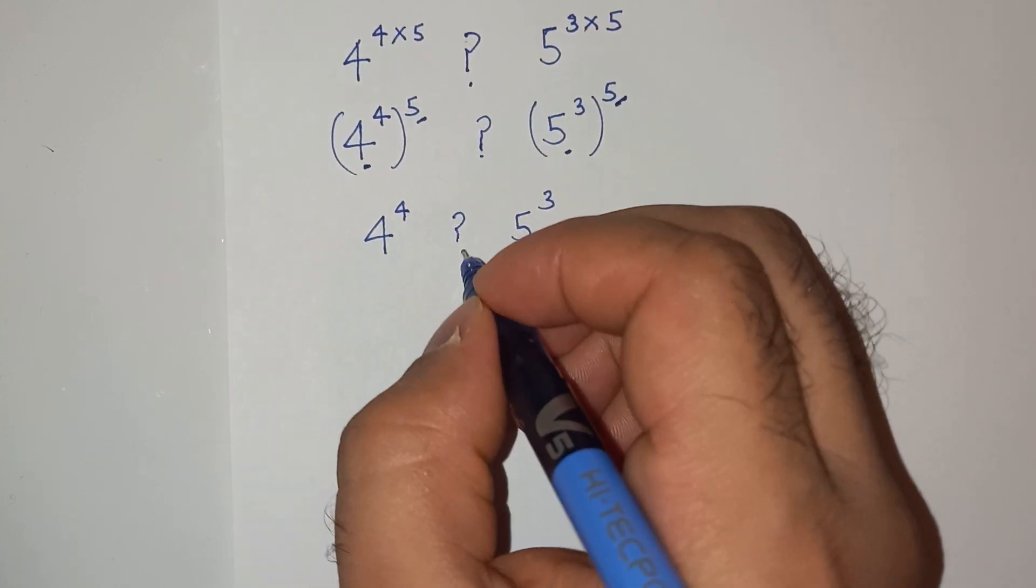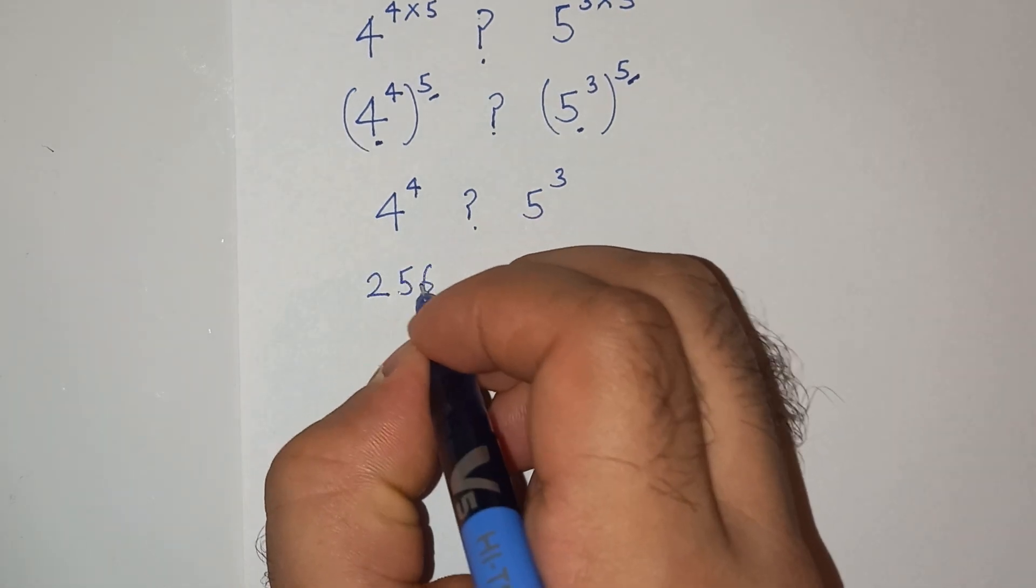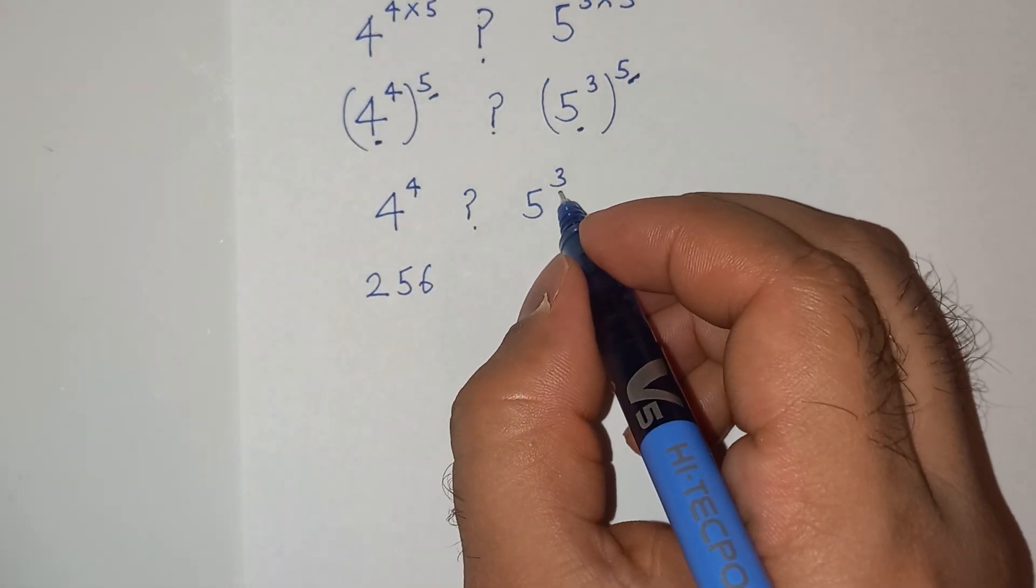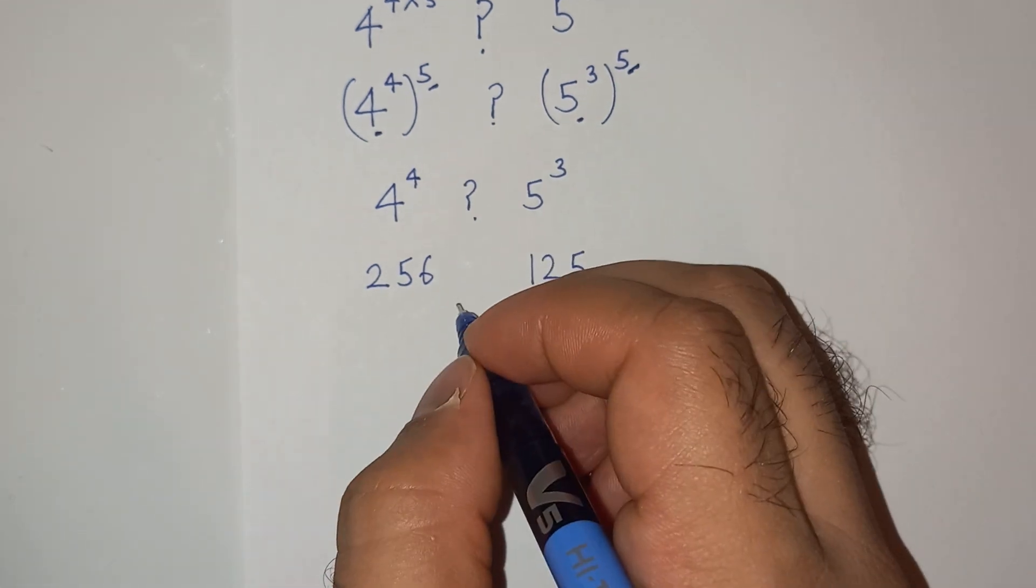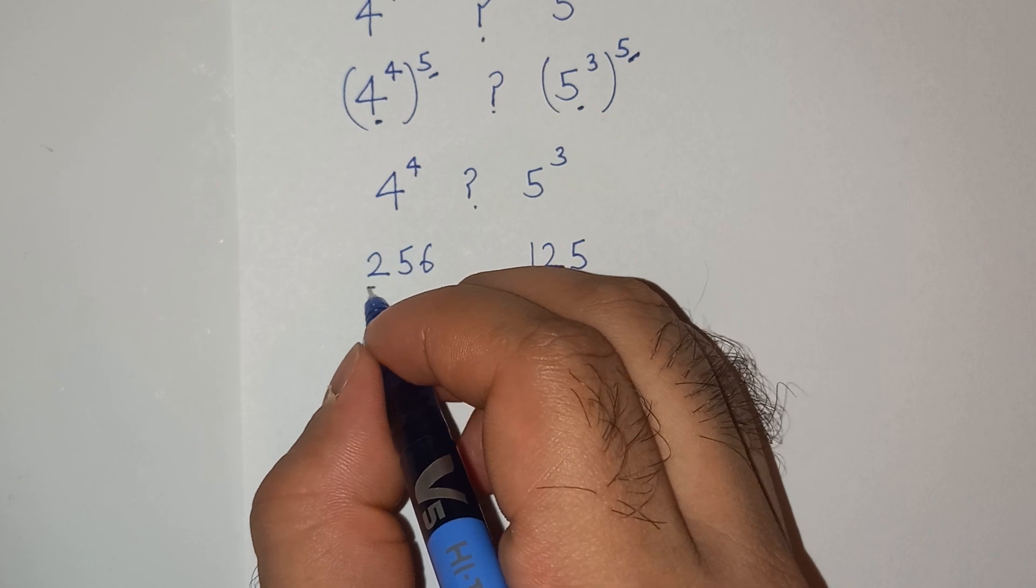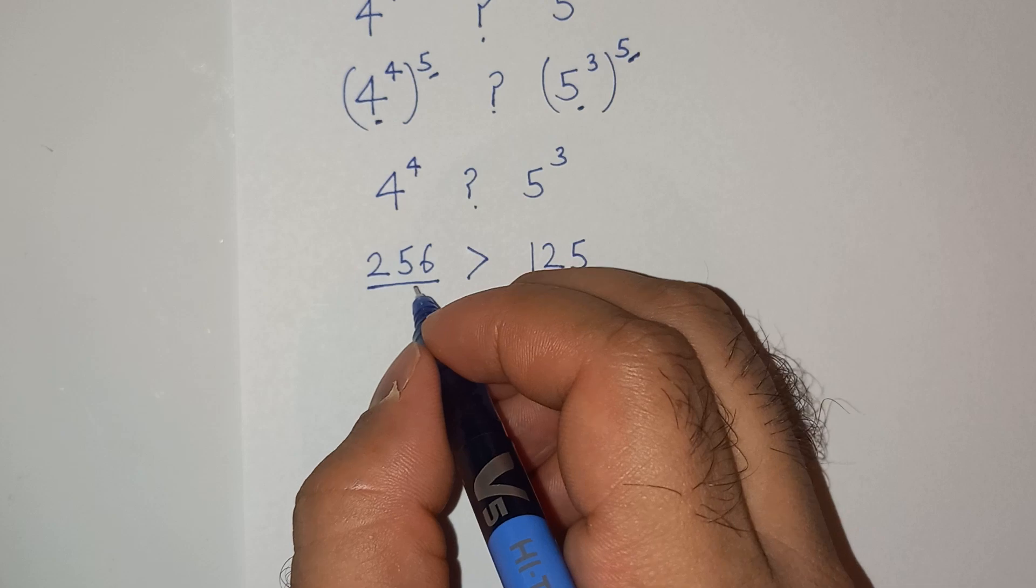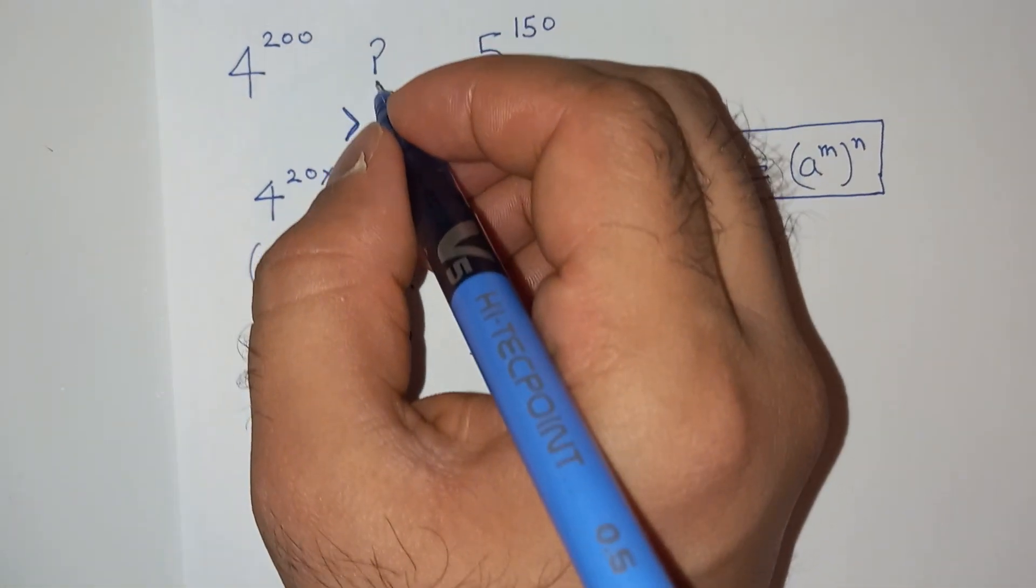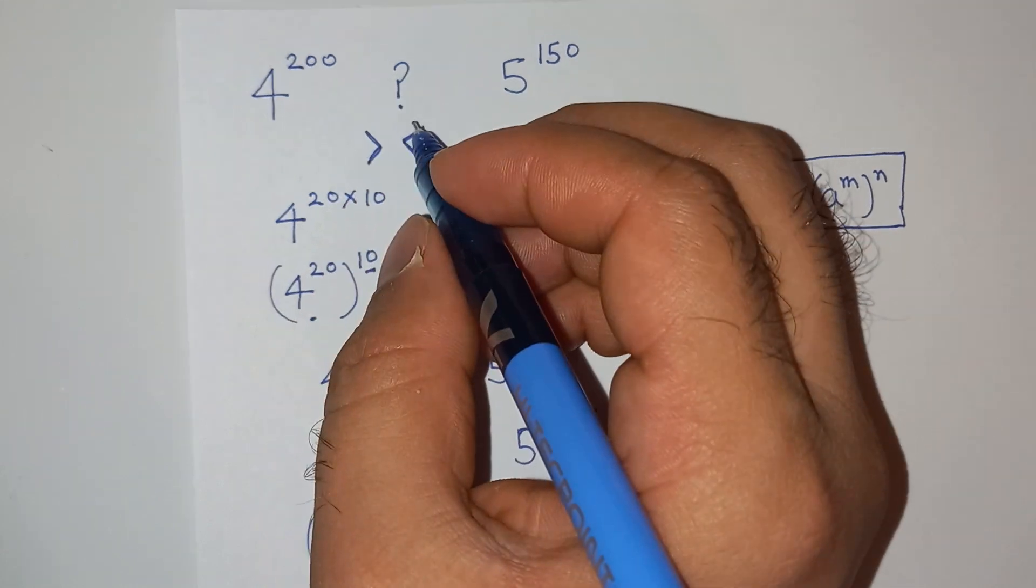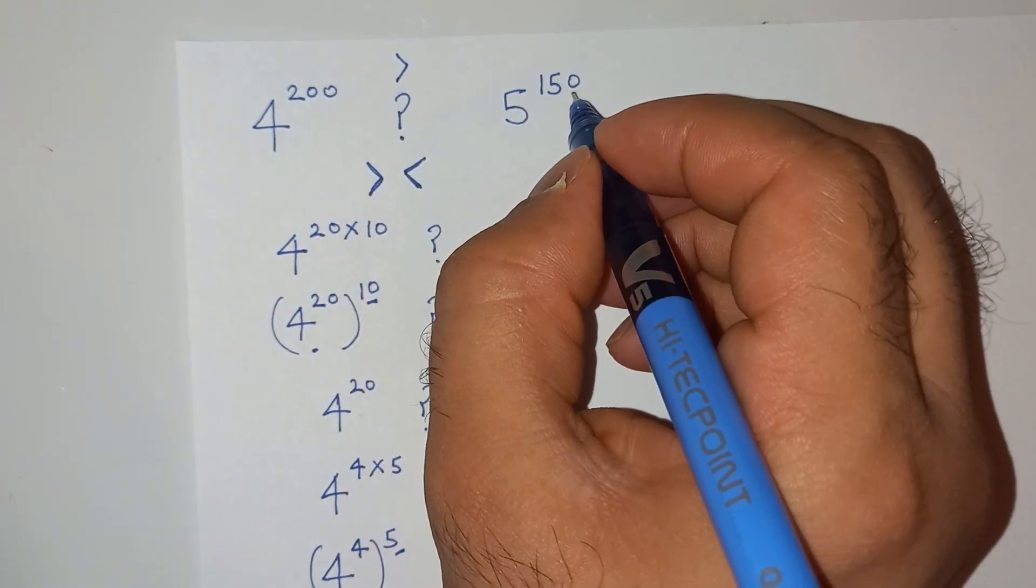Now this is easy. 4 power 4 is 256 and 5 power 3 is 125. So now you know which one is greater, of course this 256 is greater than 125. So we can say that 4 power 200 is greater than 5 power 150.